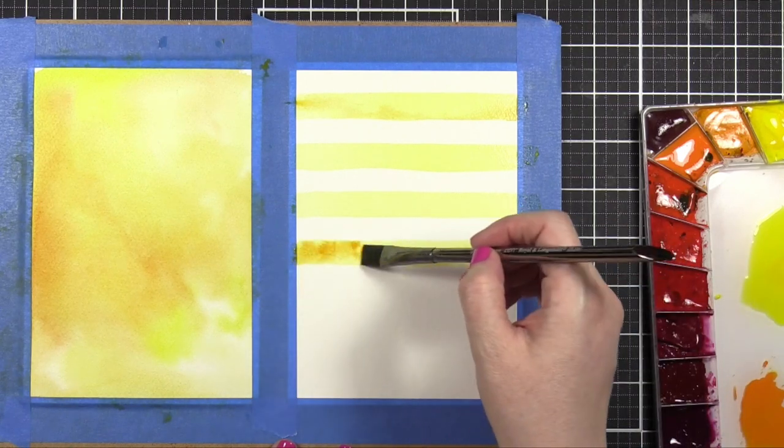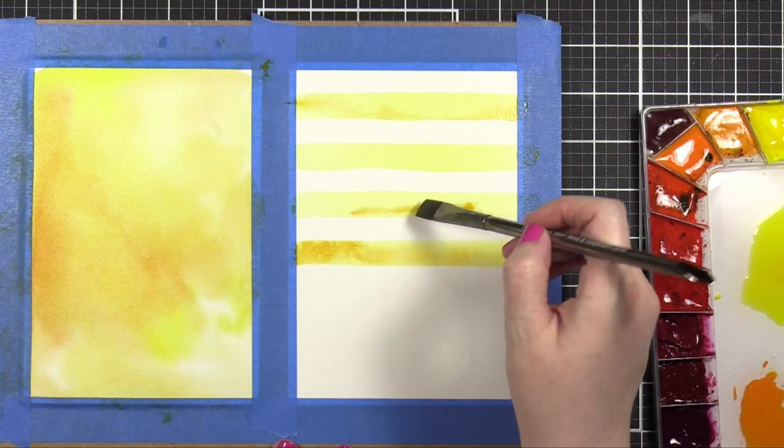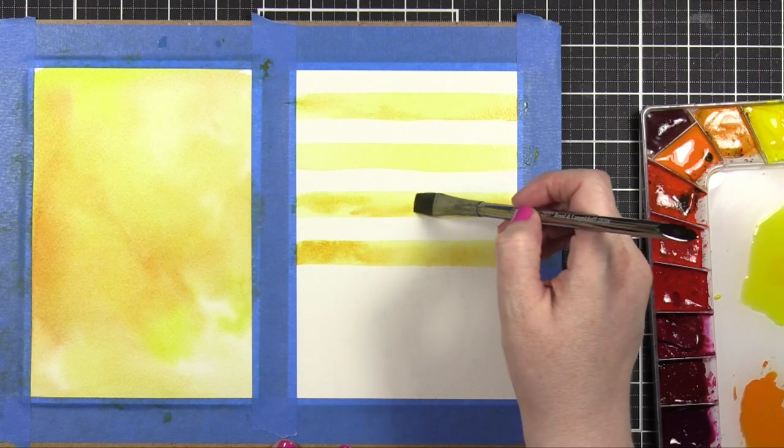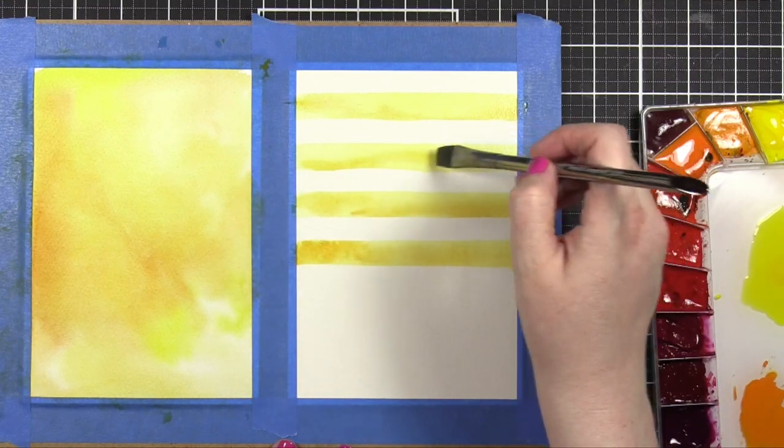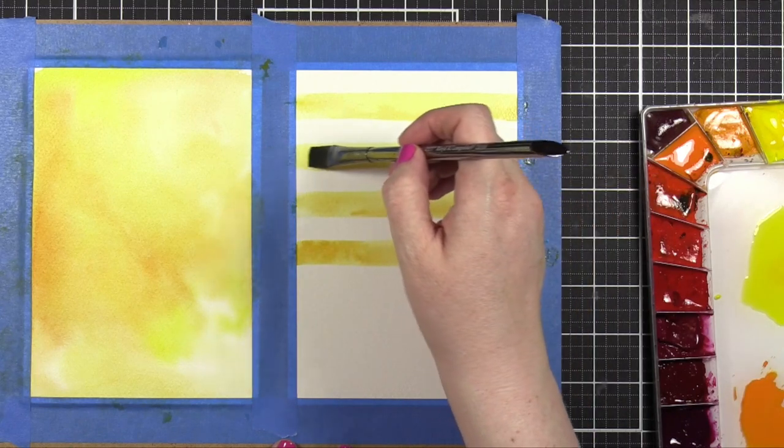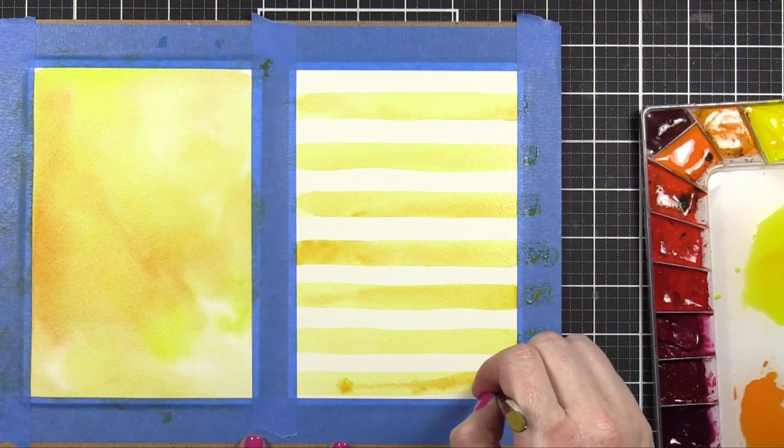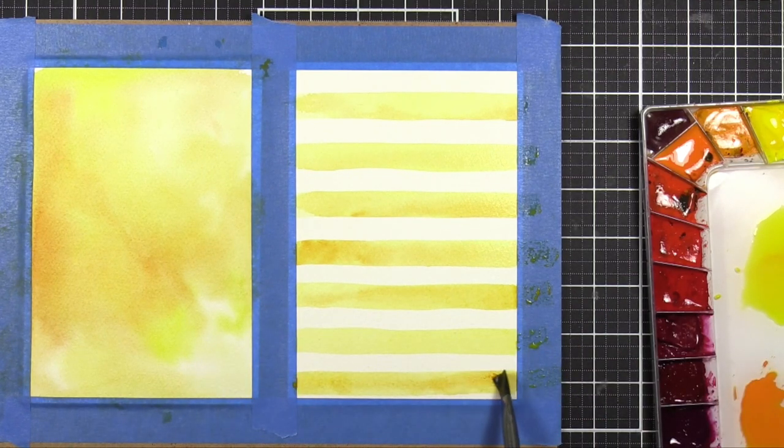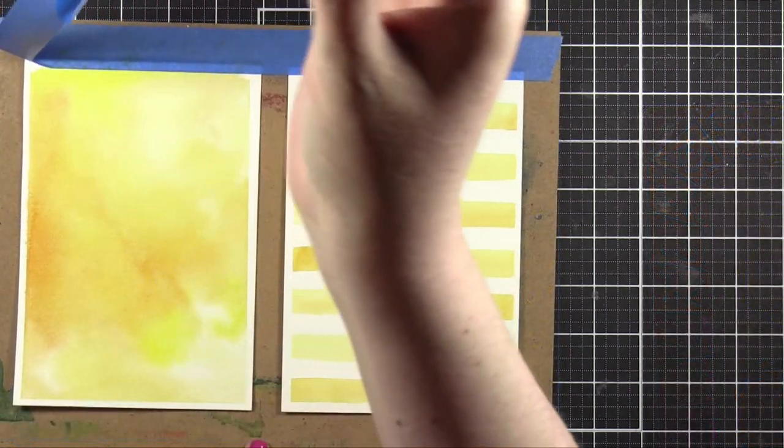And I took that brush over the area to soften it out some more, because I didn't want any harsh lines of color. This is just going to give some variation in shading on this stripe background. And this stripe background is going to be used as the main area on the card. You could definitely use pattern paper instead if you're not feeling up to watercoloring, but this is a really great way to make sure all of the colors on your card match. Just paint them all individually.